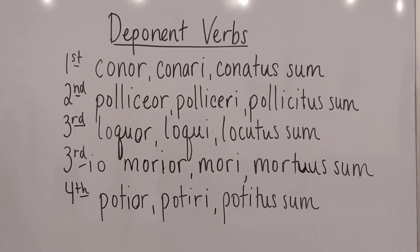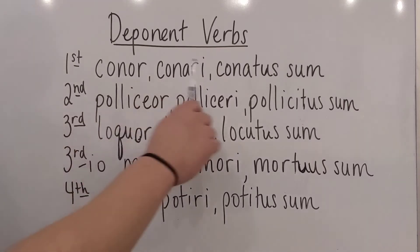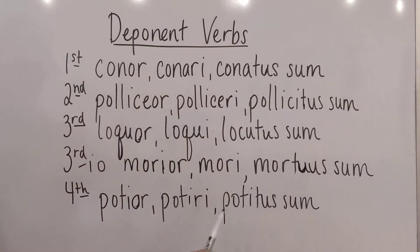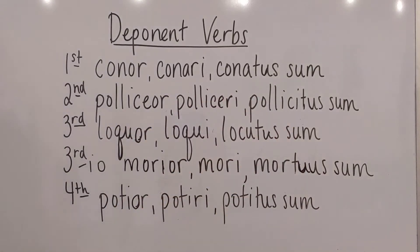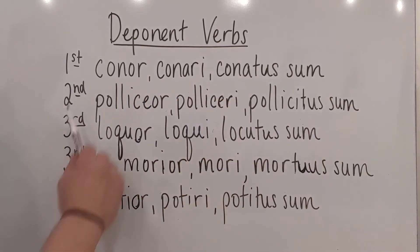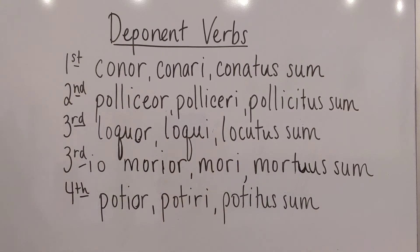They are called deponent verbs because they have depono, deponere — set or placed aside — either their active forms, because most of their forms are passive in appearance, or you could say they have set aside their passive meanings, because though they look passive in form, they are translated active in meaning. So keep that in mind always: though they look passive in form, they will almost always be translated actively in meaning.